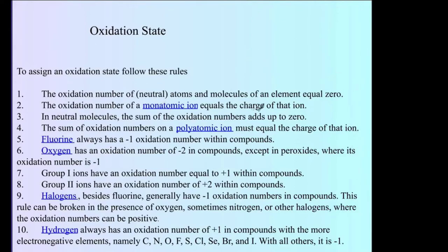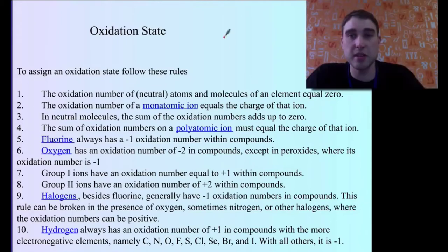The oxidation number of a monatomic ion equals the charge of that ion. So if you had Fe plus 3, the oxidation number of that one would be plus 3.